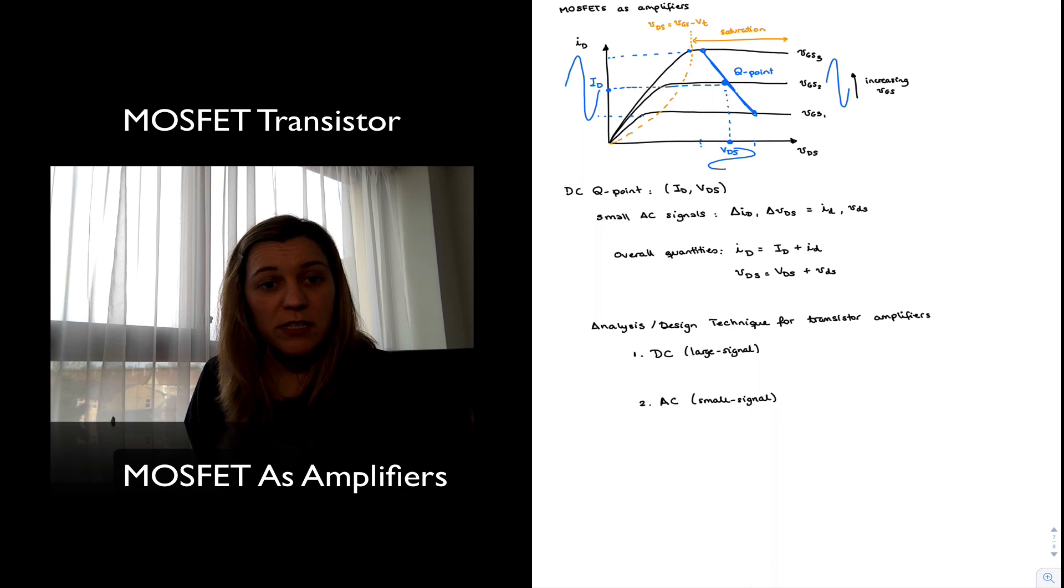Large signal because typically the DC values for those voltages are going to be in the order of volts, whereas the small signal typically we will be amplifying AC signals with amplitudes in the range of micro or milliamps.